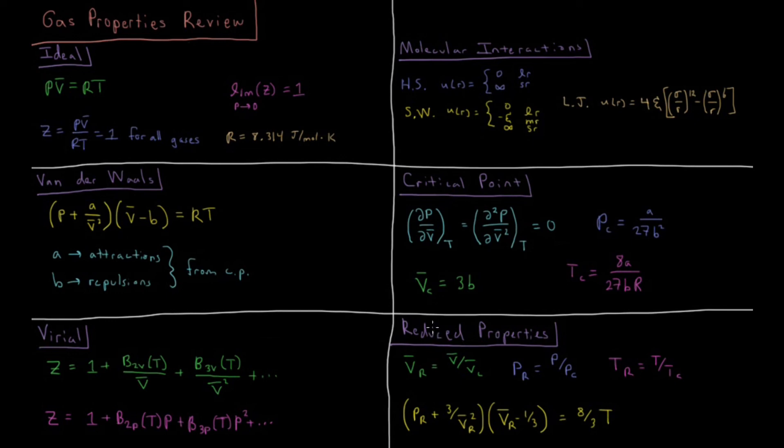Using the critical point we can define reduced properties: reduced molar volume, pressure, and temperature, which is the corresponding property divided by its value at the critical point.